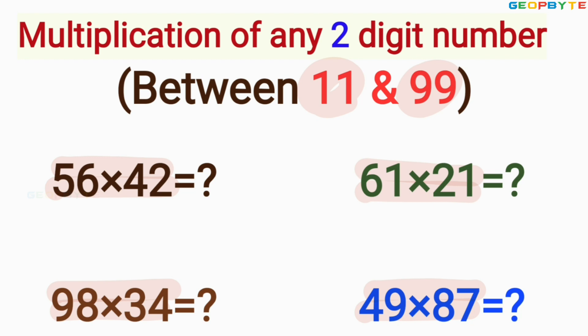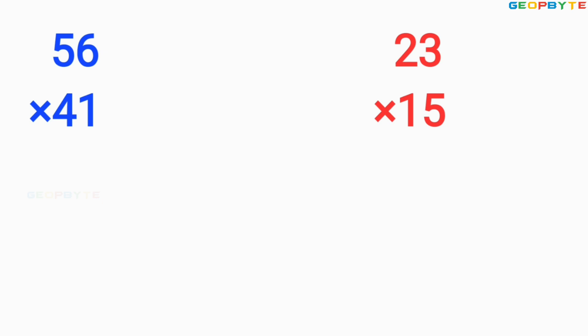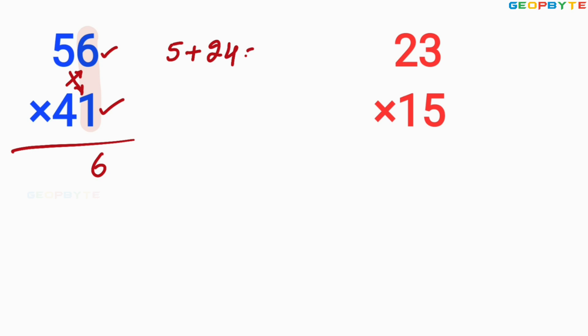First, let us take one multiplication number. Look at the multiplication number. You are asked to find the value of 56 into 41. First, multiply these two units digits: 6 multiplied by 1 is 6. Write 6 here. Then, you cross multiply: 5 multiplied by 1 plus 4 multiplied by 6 — that is 5 plus 24 — equal to 29. Write 9 here; 2 is the balance.